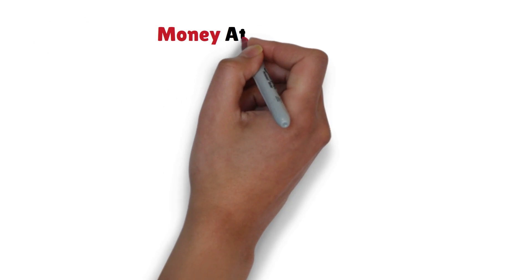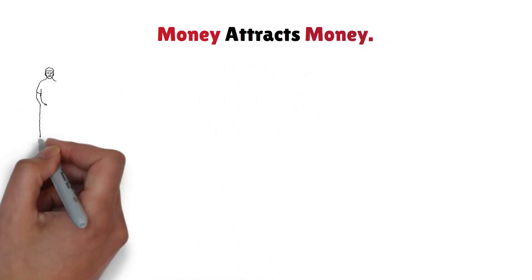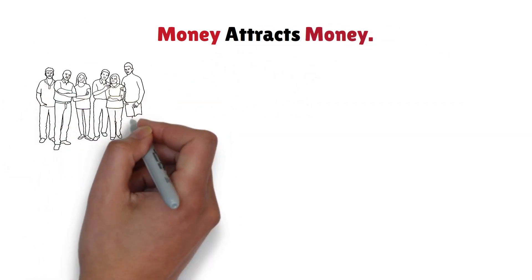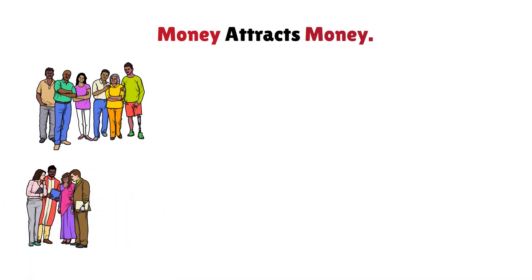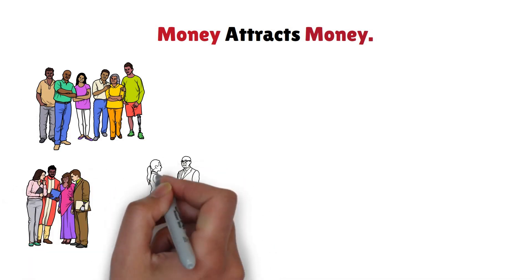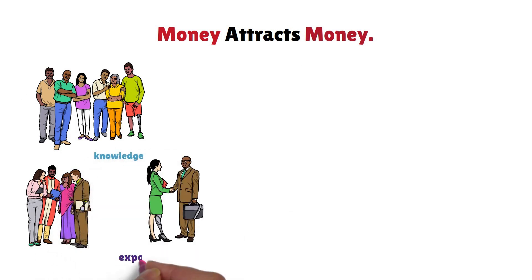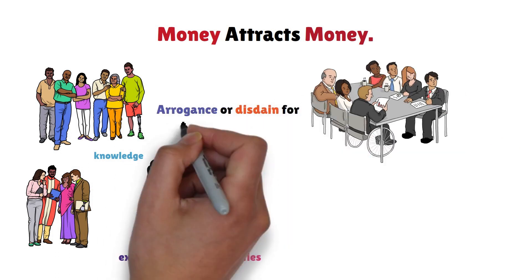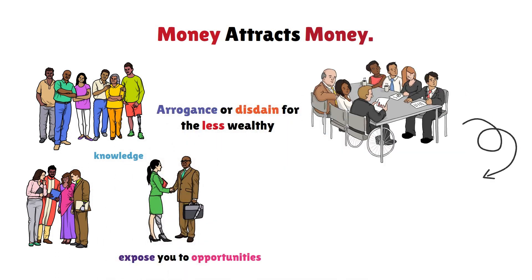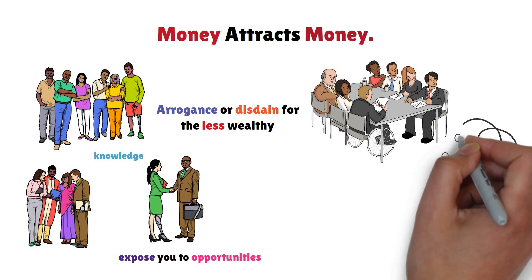Rule 2: Money attracts money. Affluent individuals tend to associate with those who share their financial status. To achieve wealth, befriend financially successful people who can mentor you, share their knowledge, and expose you to opportunities. This is not about arrogance or disdain for the less wealthy, but rather a shared mindset and network.